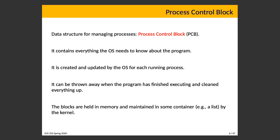We're going to take a slight detour to the behind-the-scenes view of how the operating system manages a process, just so we can have a little bit of a mental model of what's happening when a program is executing. The operating system's data structure for this is the process control block — a data structure containing what the operating system needs to know about that program in order for it to run. It will be created and updated by the operating system for every running process, and these process control blocks are held in memory and maintained in some container or list by the operating system kernel.